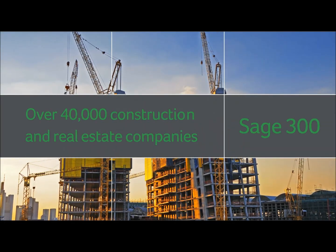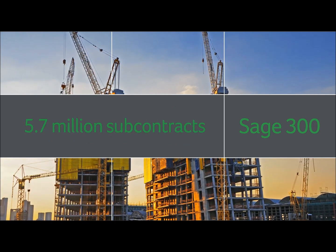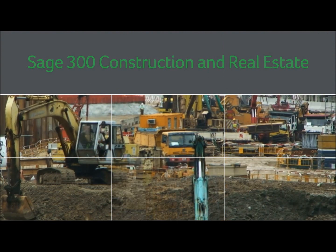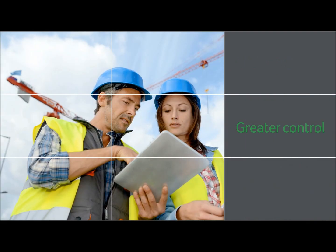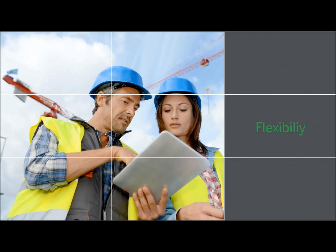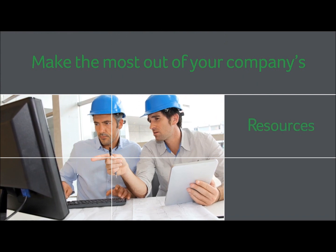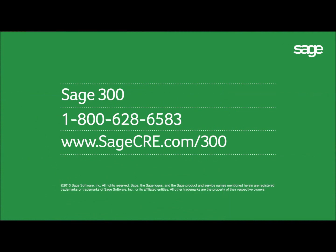Over 40,000 construction and real estate companies rely on Sage solutions to manage more than 400,000 projects, 5.7 million subcontracts, and 622,000 rental units each year. With its proven track record, you can trust Sage 300 Construction and Real Estate to help you transform your company's performance. With greater control, the flexibility to handle evolving business needs, and wider and deeper business visibility, you'll be able to make the most of your company's resources and its business opportunities. To learn more, visit www.sagecre.com/300, call 1-800-628-6583, or contact your Sage business partner.